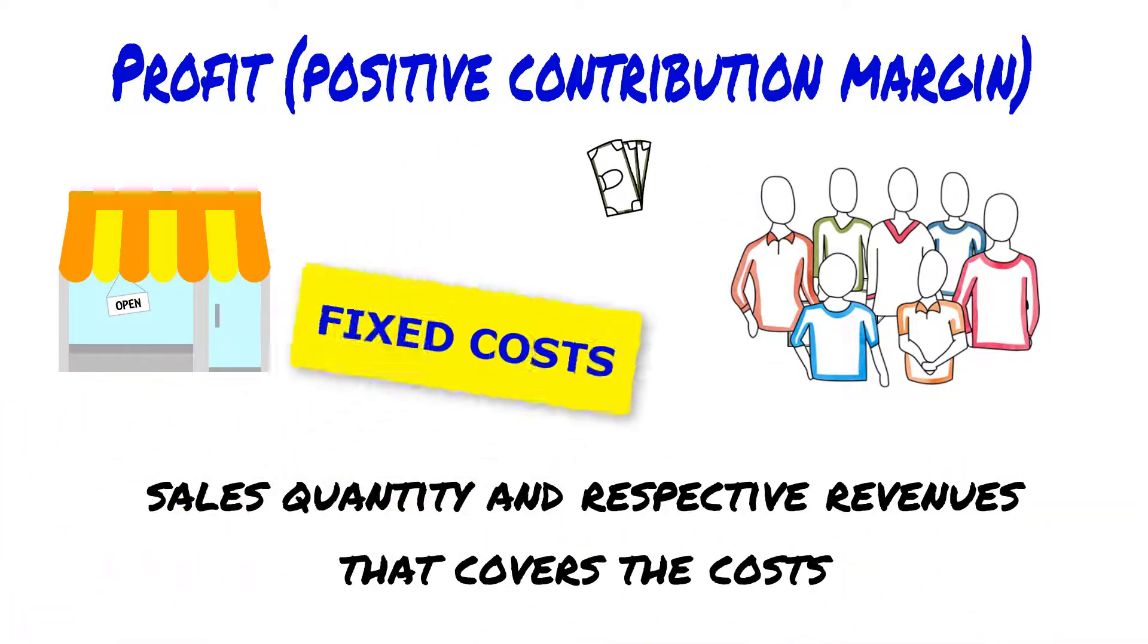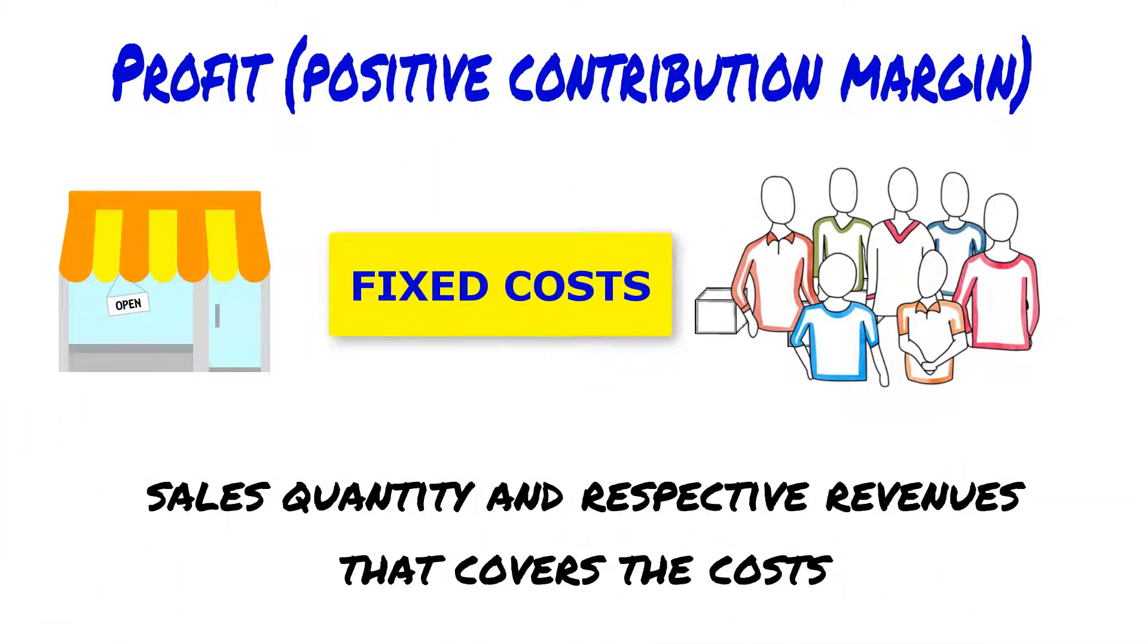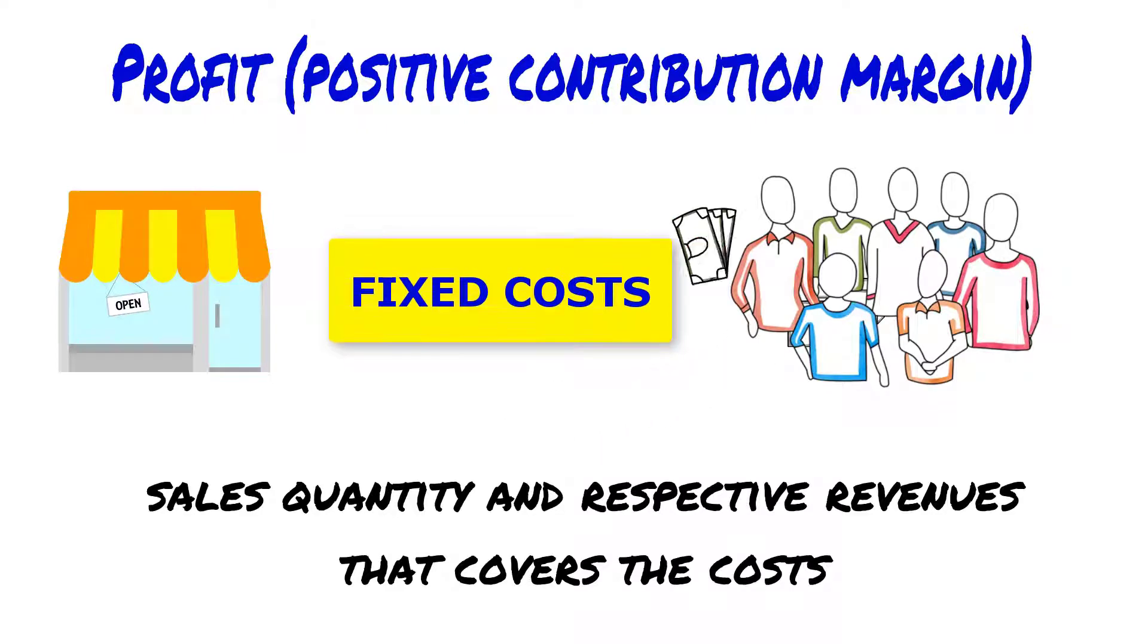Fixed costs are constant whatever quantity of goods or services produced. For instance, salary must be paid independently of units produced and therefore are considered fixed costs. Other fixed costs are property taxes, leasing payments and depreciation.